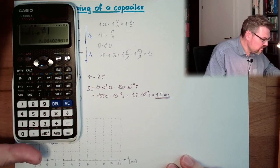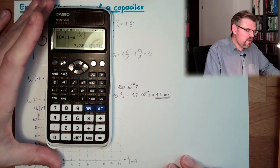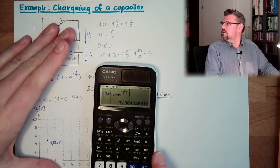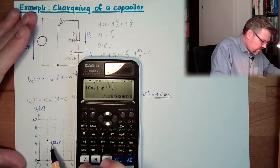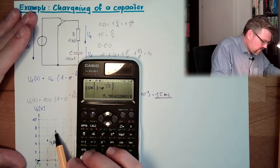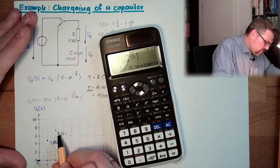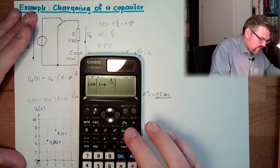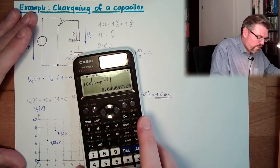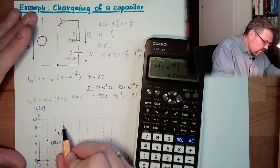After 2 milliseconds, the result is 7.36 volts — so we are at 7.36 V on the curve. After 3 milliseconds, we are at 8.64 volts.